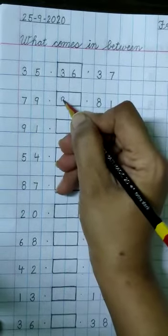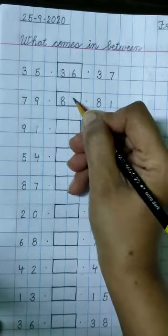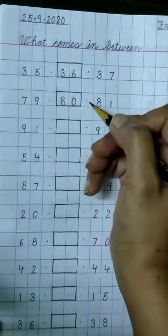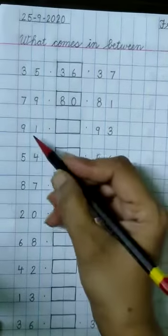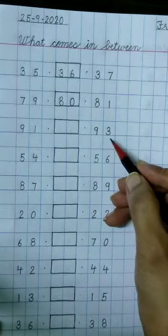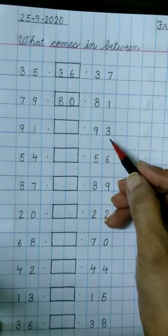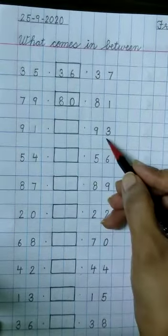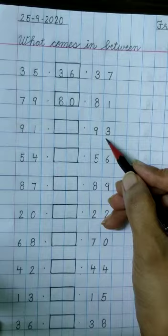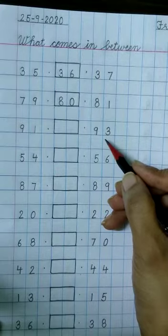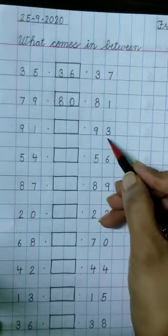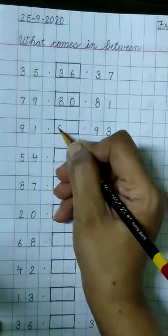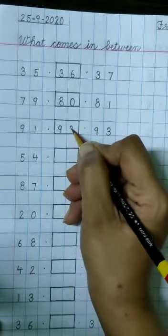So write 8, 0, 80 in this box. Now next numbers are 91 and 93. What comes in between 91 and 93? 91, 92, 93. 92 comes in between 91 and 93. So write here 9, 2, 92.